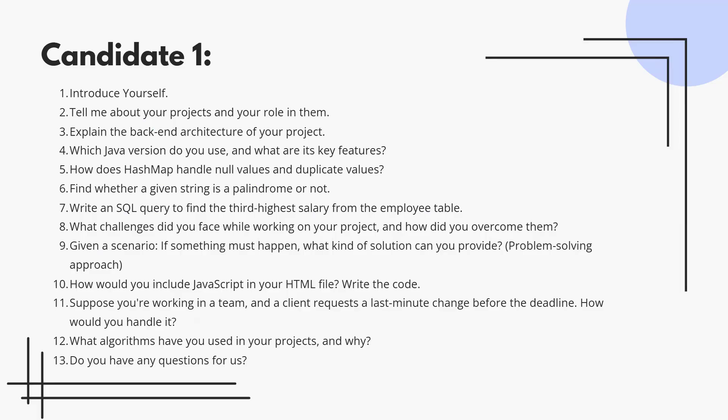How does HashMap handle null values and duplicates? Null keys are allowed once, but null values can appear multiple times. Know the internal working and be able to explain it clearly.